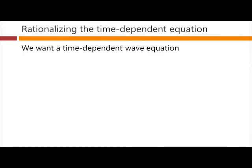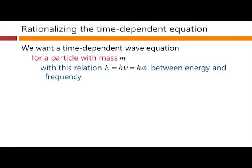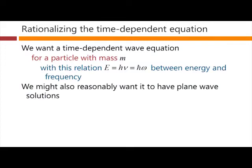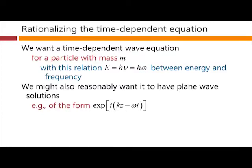So we want a time-dependent wave equation that somehow incorporates this idea, and we want an equation that works for a particle with mass m, with the specific relation E equals h nu, or E equals h-bar omega, between the energy and the frequency. For this equation, we might also reasonably want it to have plane wave solutions — for example, of the form e to the i(kz minus omega t), a well-known plane wave.